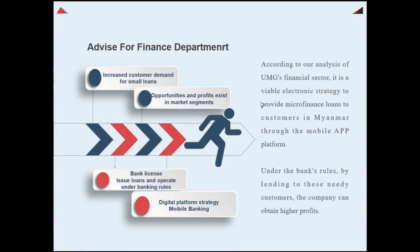Based on the current situation of UMG's finance department, we have already obtained a bank license and have the ability to issue loans and operate under banking rules. We also have a digital platform strategy such as mobile banking. According to our analysis, we have integrated the company's liquid assets. It is a feasible e-strategy to provide micro-credit to Myanmar customers through mobile app and website platforms under banking rules. By lending to those customers in need, the finance department can obtain higher profit.